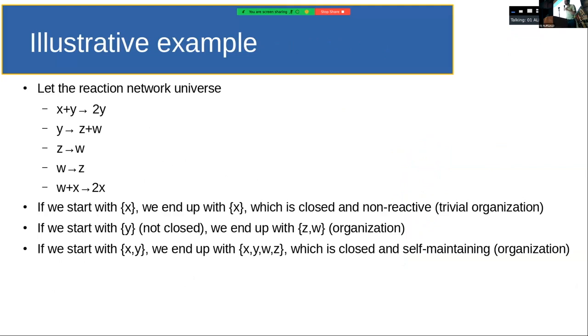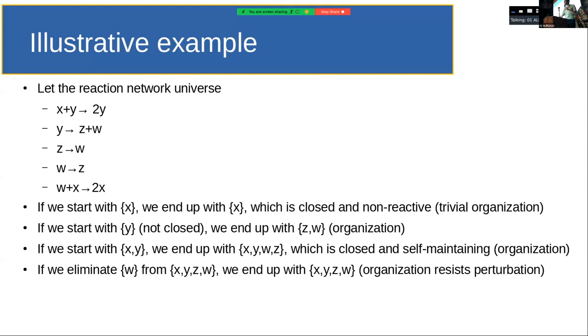And then I will go for an illustrative example just to catch the concepts. Take this reaction network, and let's say we start with the set X. We only have X in our system. No reactions can be triggered, so we end up with X in a trivial organization. If we start with Y, then if you look at the reactions, you can easily find that we will end up with set W. So the set you start with is not necessarily contained in where you will end up with. If we start with XY, we end up with XYW set, which is closed and self-maintained in the dynamical sense. And now if we eliminate W from XYZW, nothing happens because W can be regenerated by the fourth reaction. But if we eliminate Y, the whole system will collapse. So these organization movements are the kind of object that we are interested to study to provide a model for how goal-directedness could have emerged.